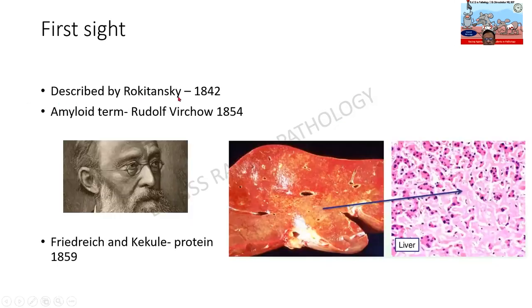The term was first described by Rokitansky in 1842, and subsequently Rudolf Virchow, the father of pathology, termed it as amyloid. Amyloid means starch-like — he thought it to be a carbohydrate and hence the name. But later, in 1859, it was found to be a protein. So amyloid is not a starch but a protein.